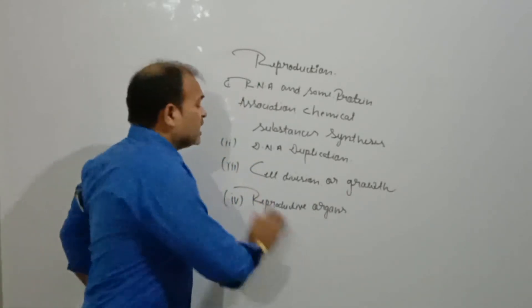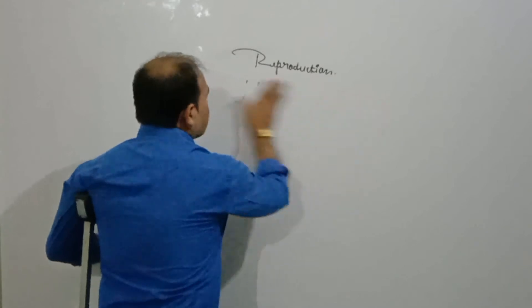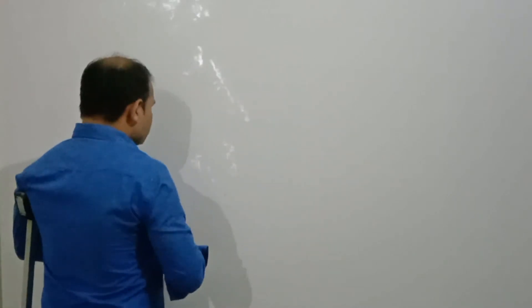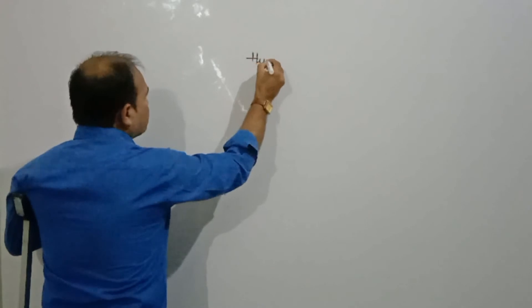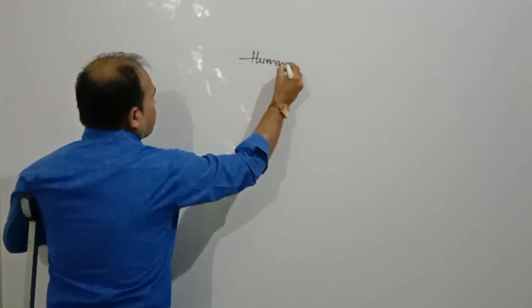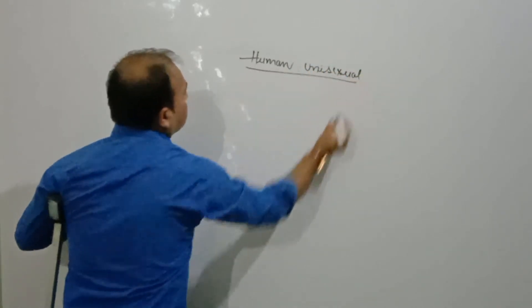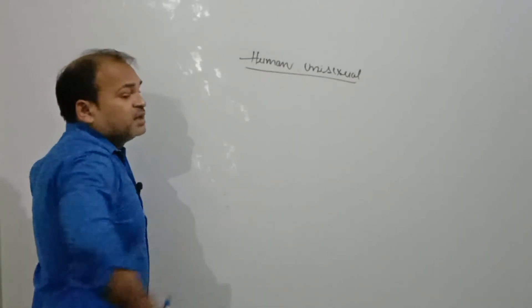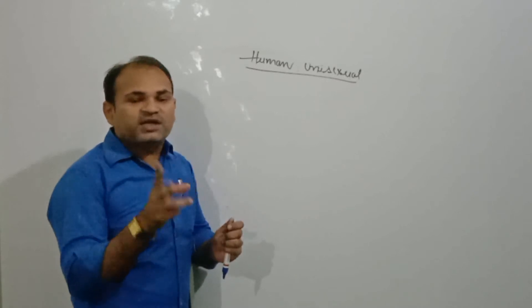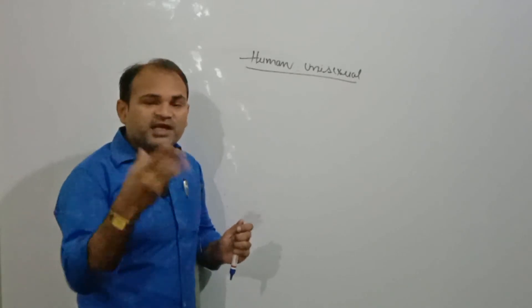आज हम discuss कर रहे हैं human reproduction के बारे में। Human जो है, एक higher vertebrate है, और यह एक unisexual animal है। इसका मतलब है कि इनमें sexual dimorphism clear है — इनमें या तो male वाला gonad present होगा, या तो female वाले gonad present होंगे। Human में sexual dimorphism clear है, that means easily identify किया जा सकता है कि वो male है या female है।